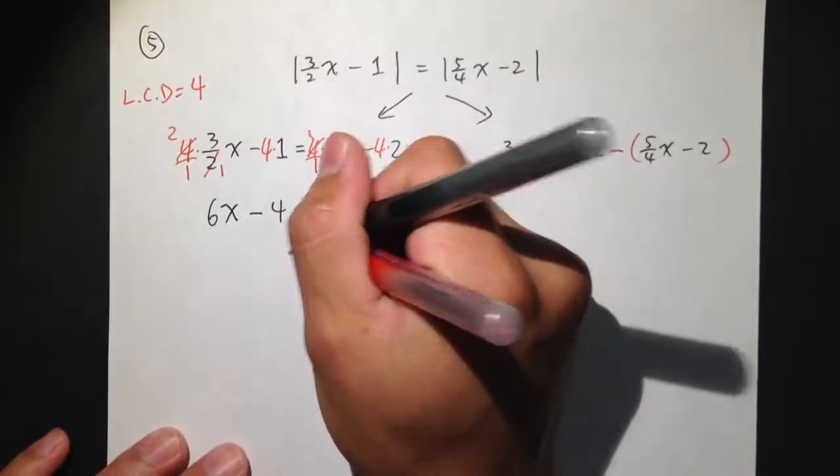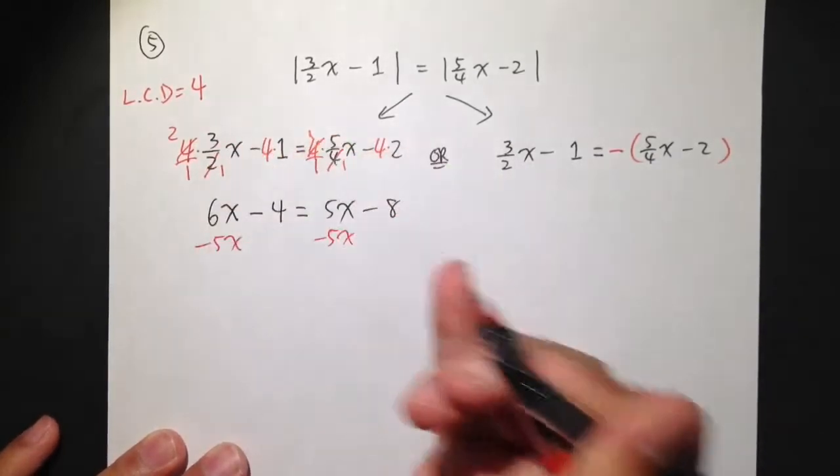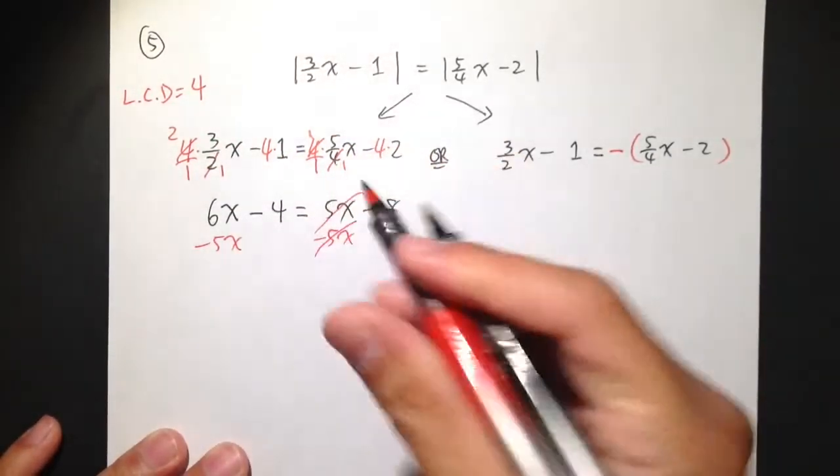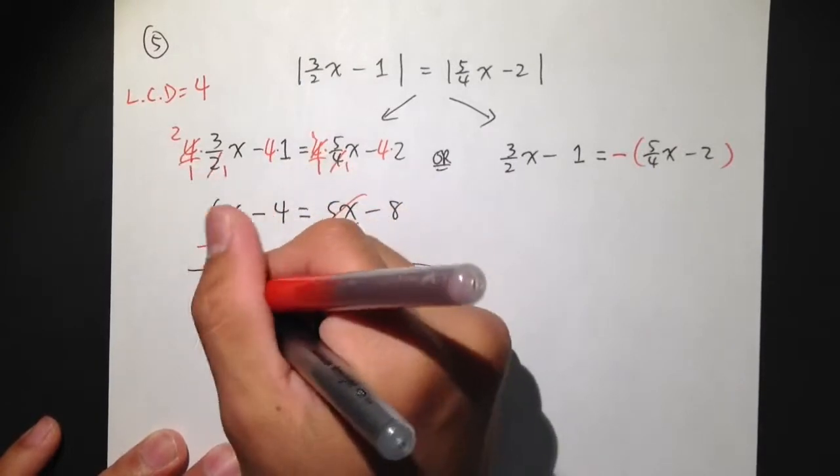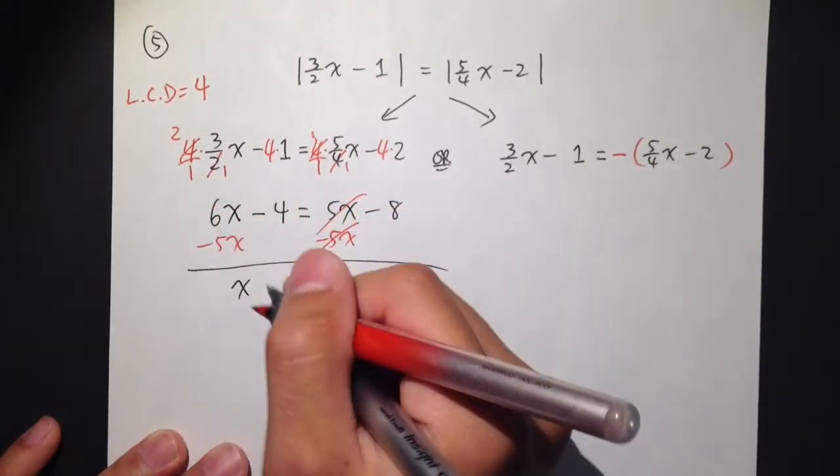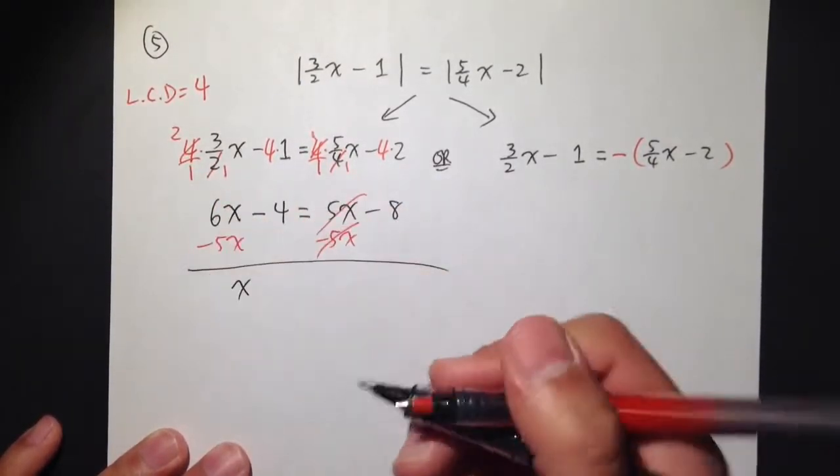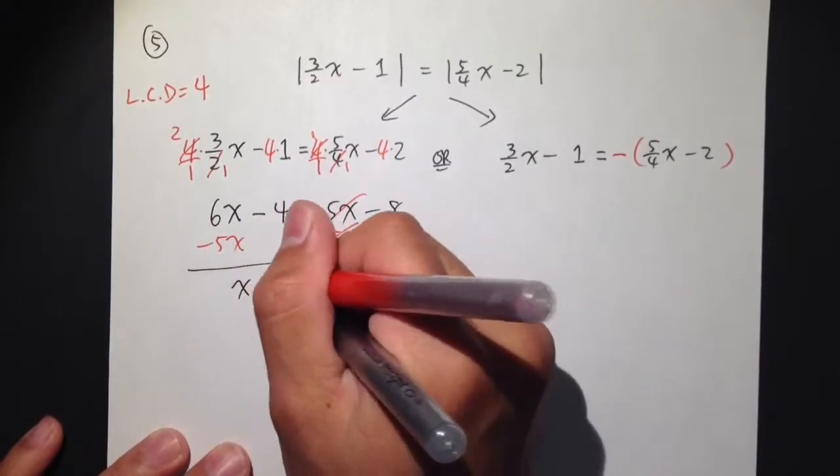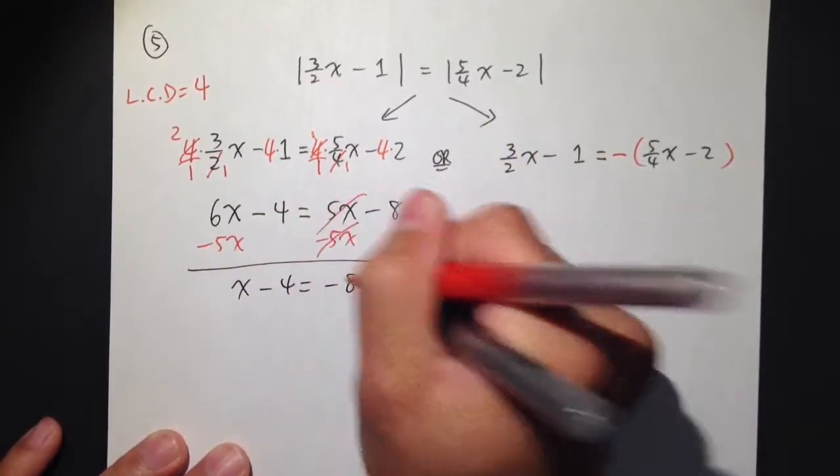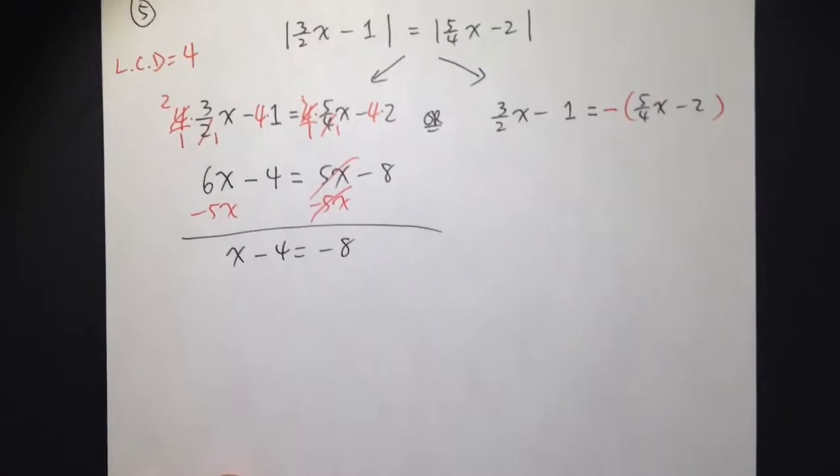Then as a habit, let's subtract 5x on both sides. Move all the x to the left-hand side. I get 6x minus 5x is just x, or 1x. So, x minus 4 is equal to negative 8.